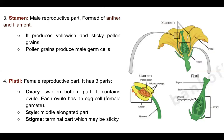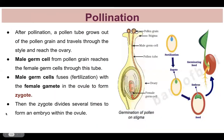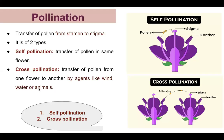The male reproductive part — the stamen — has anthers at the top, and inside the anthers, pollen grains are present. Pollen grains are the male germ cells, or sex cells. In the female reproductive part, inside the ovary, there is the ovule. The pollen grains need to travel from the anther all the way to the ovule inside the ovary.